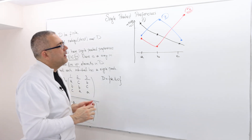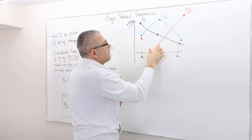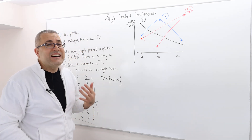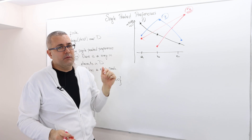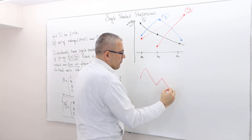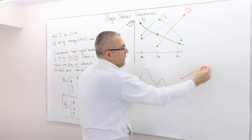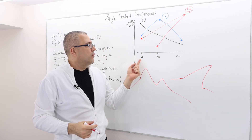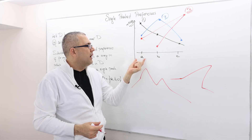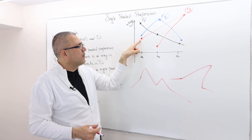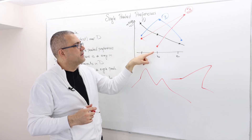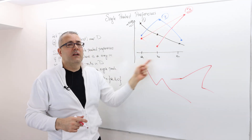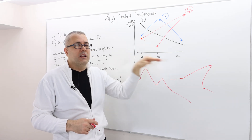You might ask why we draw the red line in this particular fashion rather than some other way that looks like a single peak. The reason is that the line-up is A, B, C — so A is first, then B is second, then C. When drawing the utility function, I must connect A to B and then B to C. I cannot go from A directly to C and then to B — that's not how those alternatives are ordered. The ordering of the line-up is crucial.